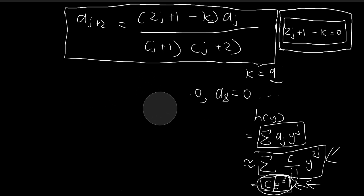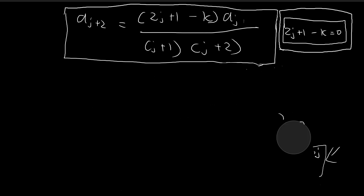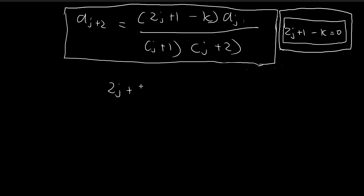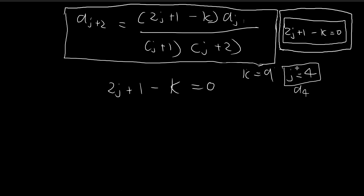Using this fact, we can deduce a pretty important result. We have a choice: we need to choose a j such that the recursion formula will stop. In the k equal to 9 example, the recursion formula stopped at j equal to 4 — we went to a4, and then a6, a8, a10, and so on were all 0. That was the case where we chose j equal to 4 such that the termination condition is satisfied.